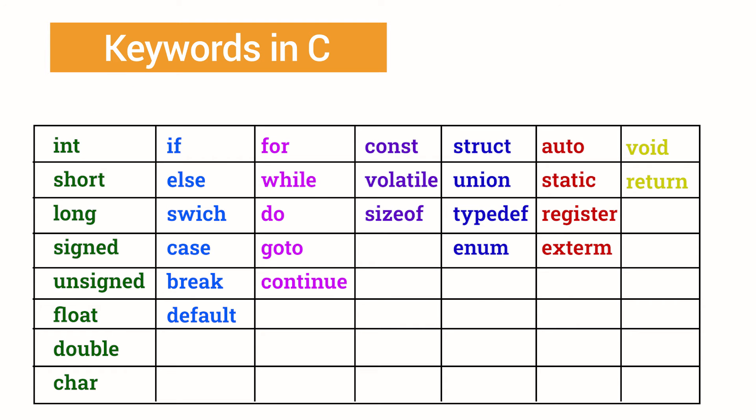This is the list of 32 keywords. These keywords are essential for writing C programs and have predefined meanings that are recognized by the C compiler.